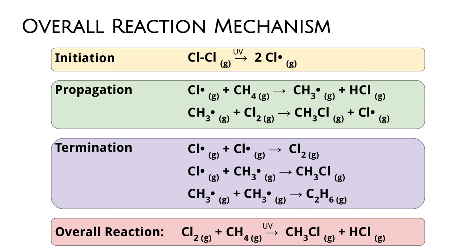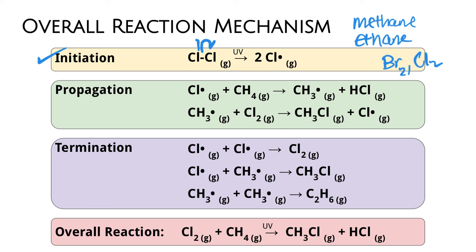So now that we've gone through the steps, this is our overall reaction mechanism. If you are ever asked to write out the reaction mechanism for a free radical substitution of methane or ethane reacting with bromine or chlorine, you would write out the initiation step with half-arrows, the two reactions for propagation, the three reactions for termination, as well as your overall reaction.